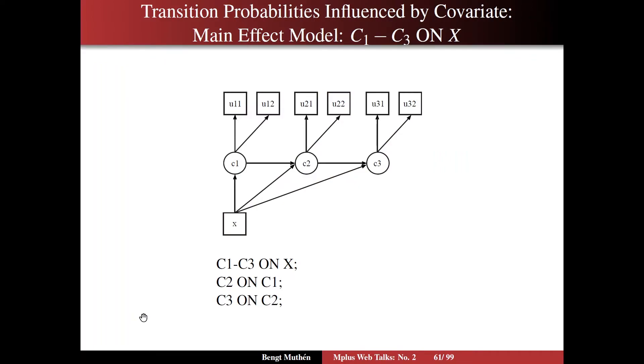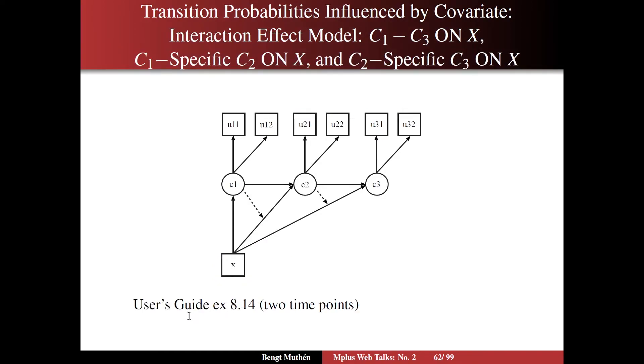Now looking at the main effect model, the second model, you have then X influencing all three latent class variables specified simply as C1 to C3 on X and C2 on C1 and C3 on C2. So number three, the more complex model is the interaction model, which you recognize from user's guide 8.14.